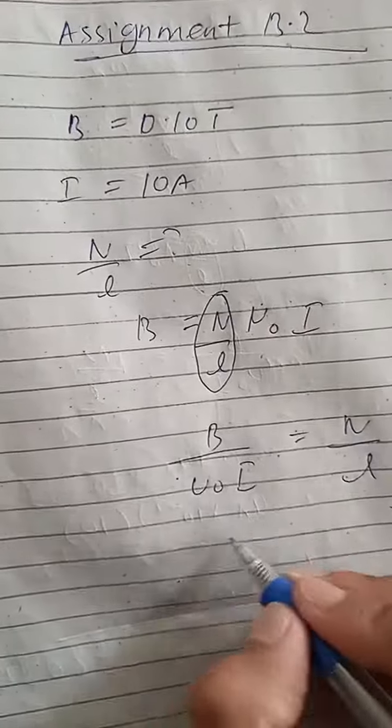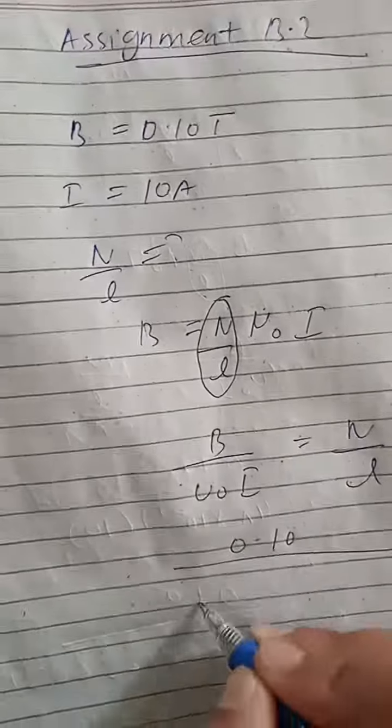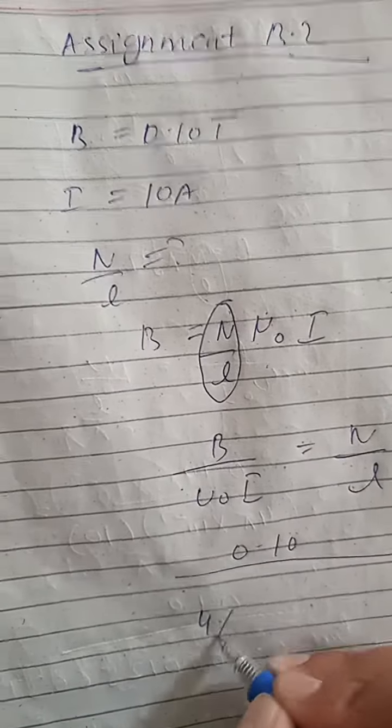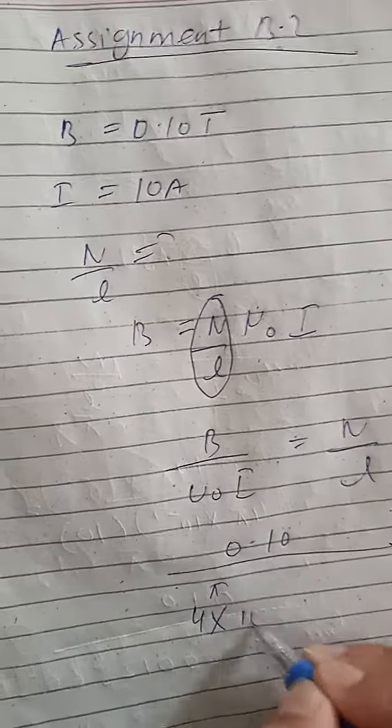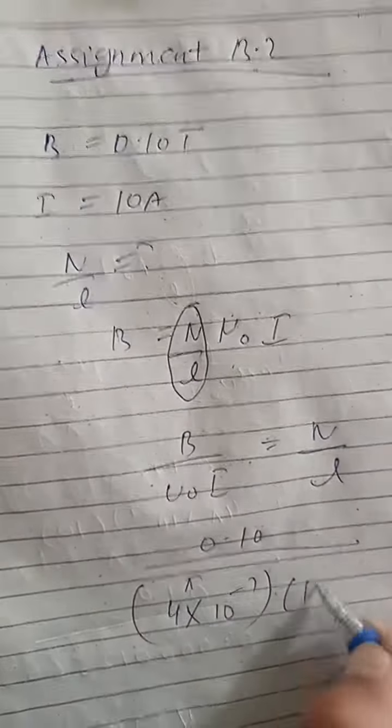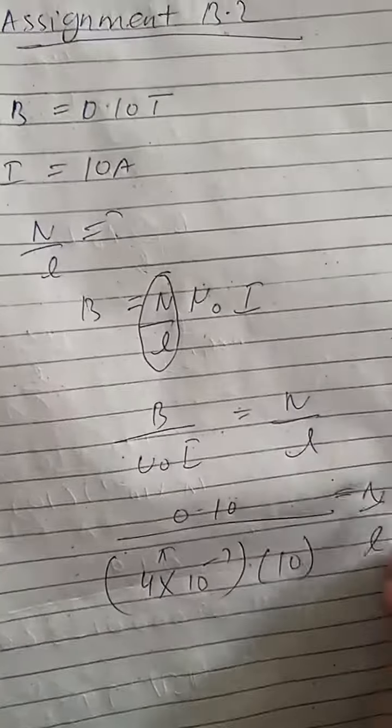So B by this will be divided. So B is 0.10, its value is μ₀ 4π × 10⁻⁷.